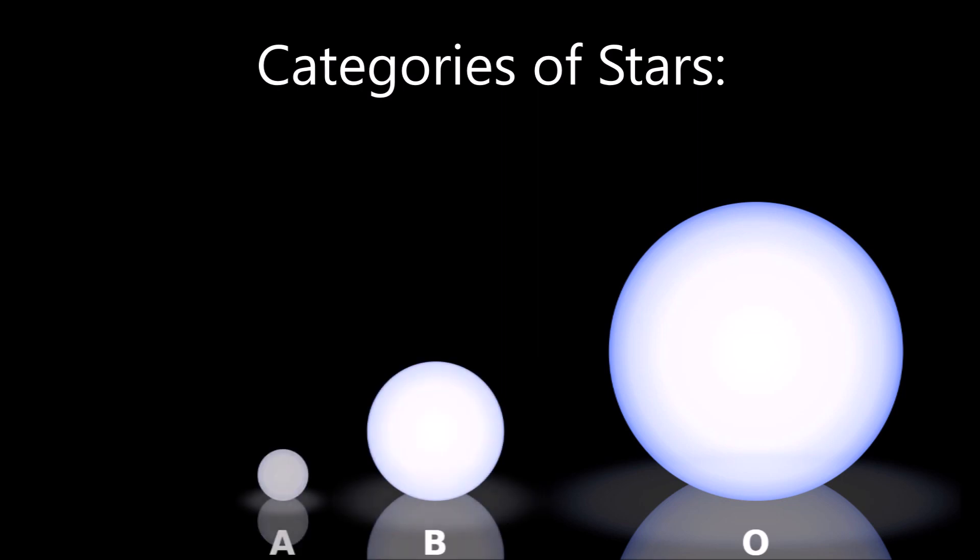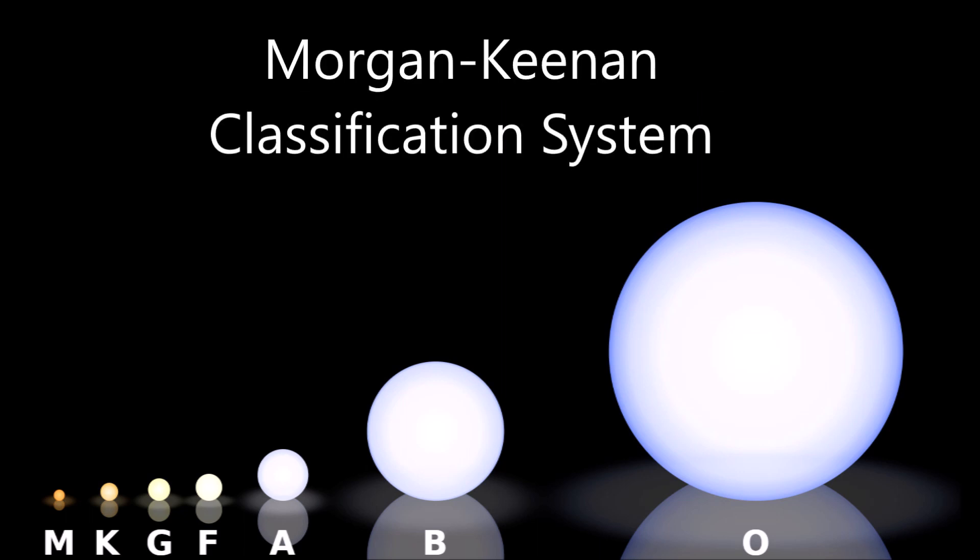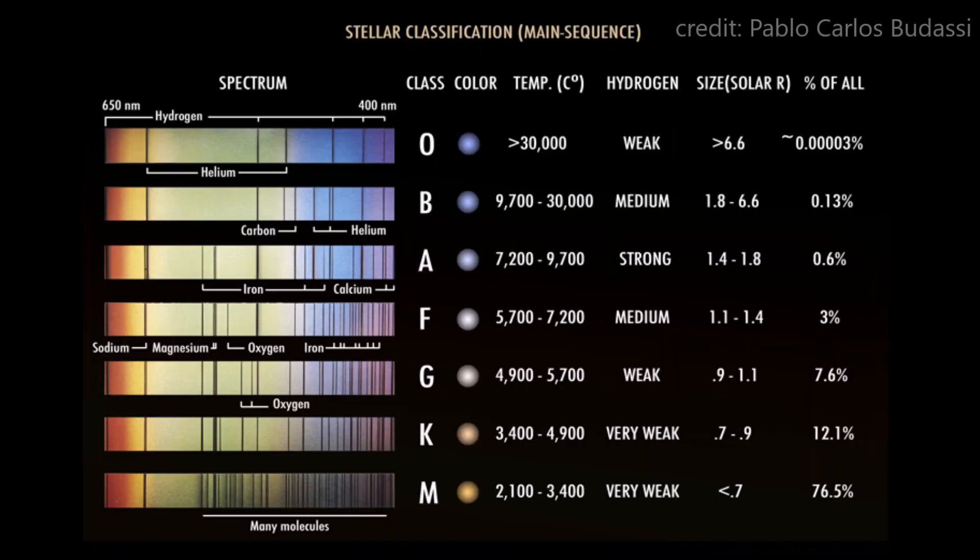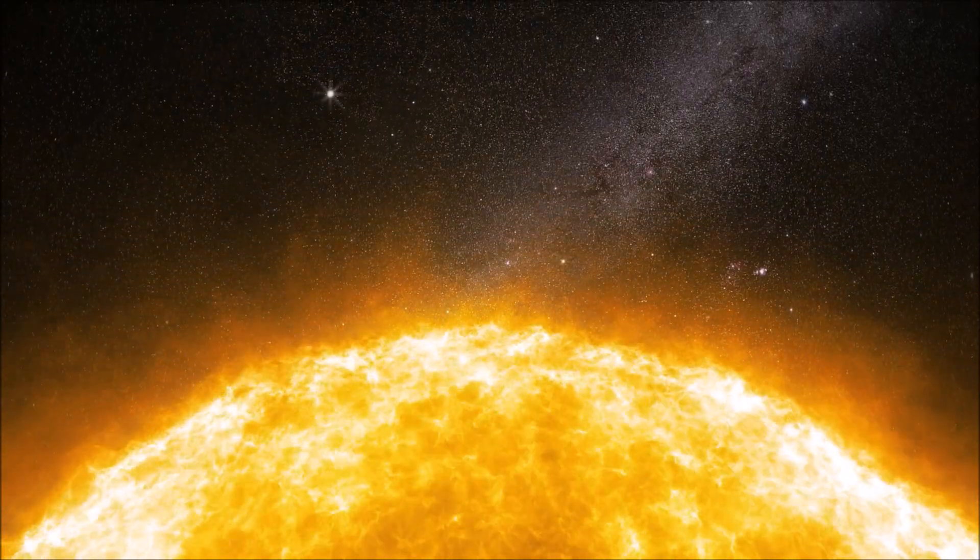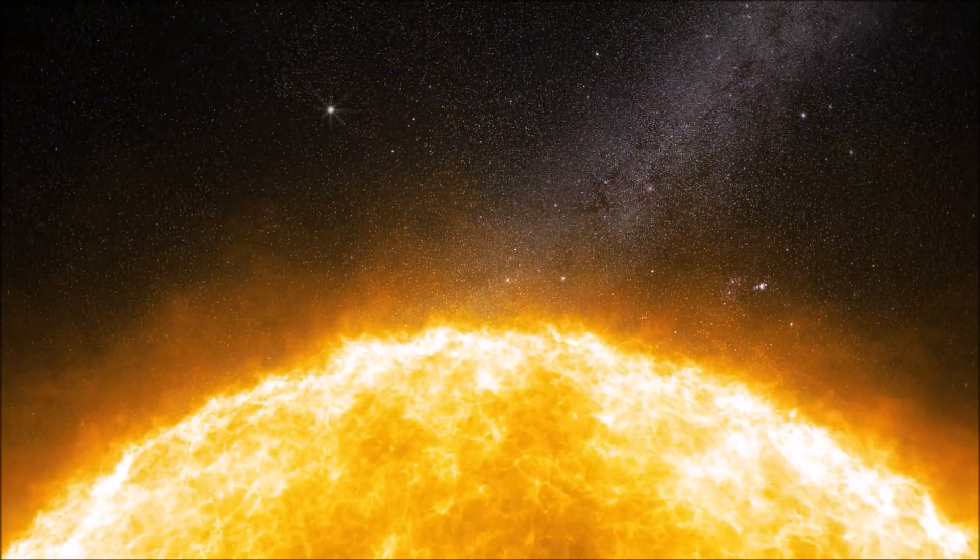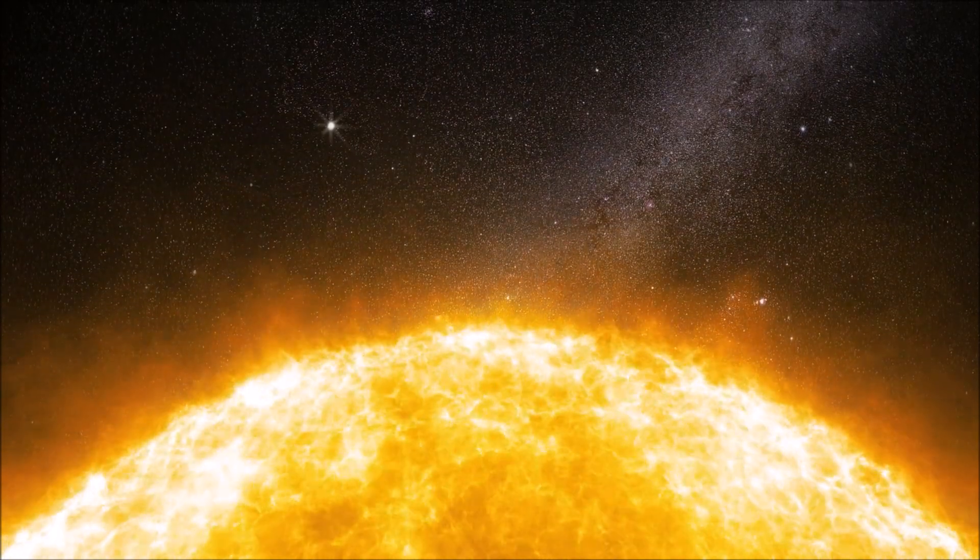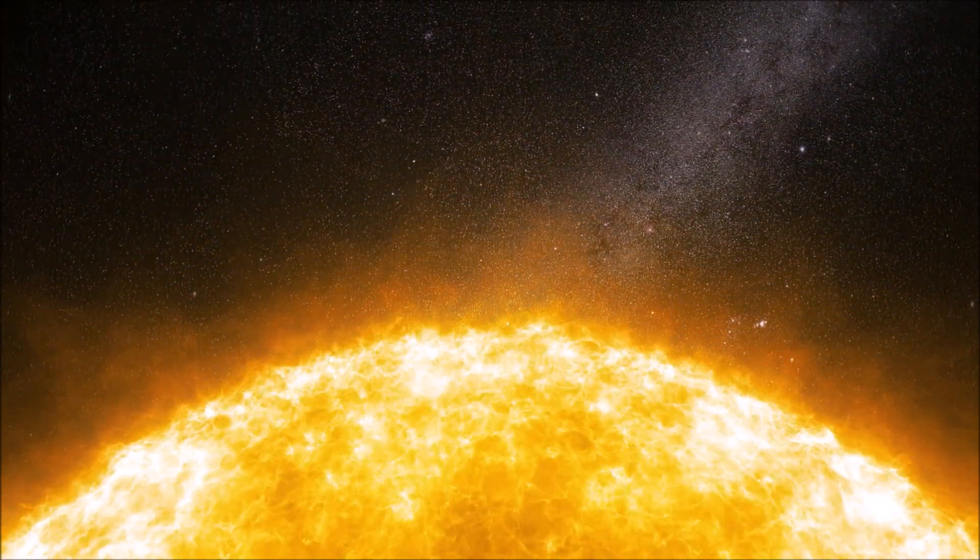The spectral classification system divides stars into seven main categories: O, B, A, F, G, K, and M. These categories are also referred to as the Morgan Keenan classification system, named after the astronomers who first introduced it. The categories are arranged in order of decreasing temperature, with O stars being the hottest and M stars being the coolest. These spectral types are further divided into ten subclasses, with the numbers 0 to 9, representing the temperature order of stars within each spectral type.